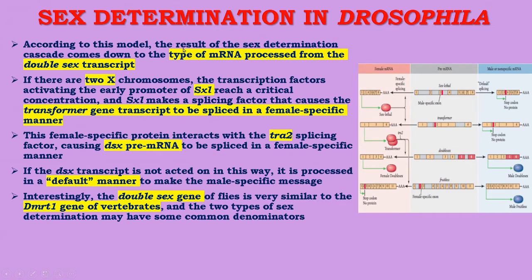In summary, sex determination in Drosophila comes down to the type of mRNA processed from the doublesex transcript. If there are two X chromosomes, transcription factors activate the early promoter of SXL, which makes a splicing factor causing the transformer gene transcript to be spliced in a female-specific manner. This female-specific protein interacts with the Tra-2 splicing factor, causing dsx pre-mRNA to be spliced in a female-specific manner. Without this, dsx is processed by default to make the male-specific message. Interestingly, the doublesex gene of flies is very similar to the DMRT1 gene of vertebrates, and the two types of sex determination may share common denominators.